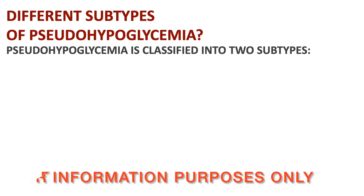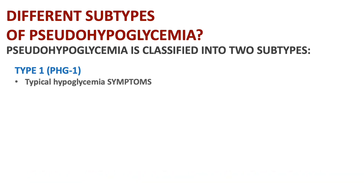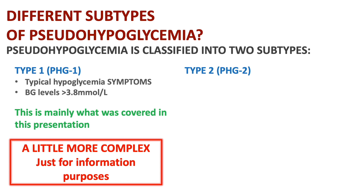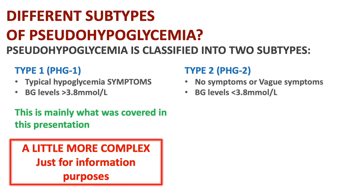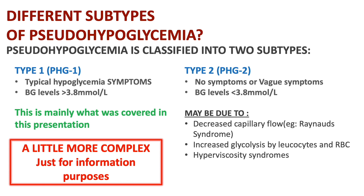Before getting into management, there are two subtypes of pseudohypoglycemia. In type 1, the person generally presents with typical hypoglycemic symptoms and blood glucose levels above 3.8 millimoles per liter — mainly what we've been covering in this presentation. With type 2, it's more complex. Symptoms tend to be more vague or absent, blood glucose levels tend to be below 3.8 millimoles per liter, and other factors may be involved such as decreased capillary blood flow as in Raynaud's syndrome, increased glycolysis by red blood cells or leukocytes, and hyperviscosity syndromes.